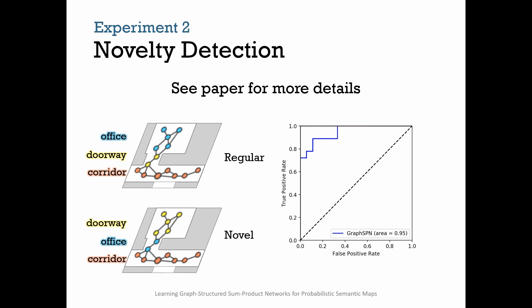In our experiments, we also showed that given a previously unseen semantic map, Graph SPN is able to detect whether the structure of the map comes from the original distribution or is novel. For this, we threshold the likelihood of all the local evidence over the entire graph. For more details, please refer to our paper.